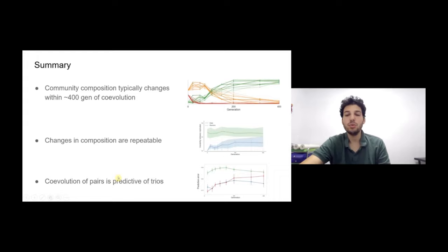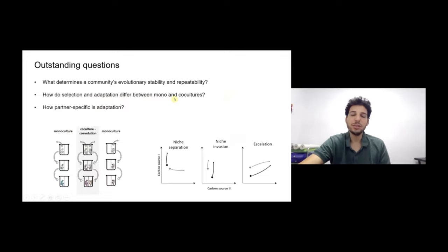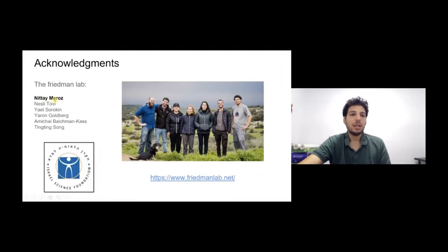There are still many outstanding questions we're excited about. We showed variability in community stability and repeatability but don't know what determines that. We also don't know the difference in selection forces and adaptations when species evolve alone versus co-evolving with others, and how partner-specific adaptation is — does it matter whether you're evolving with species A or species B? We're addressing these by looking at carbon utilization and specific mutations in evolved strains. We have open positions, so please get in touch. Thanks to Intime Rose who did the bulk of this work, the rest of the lab, and our funding sources.